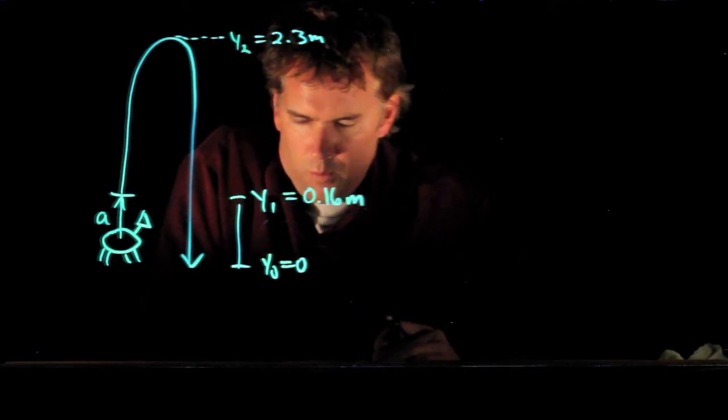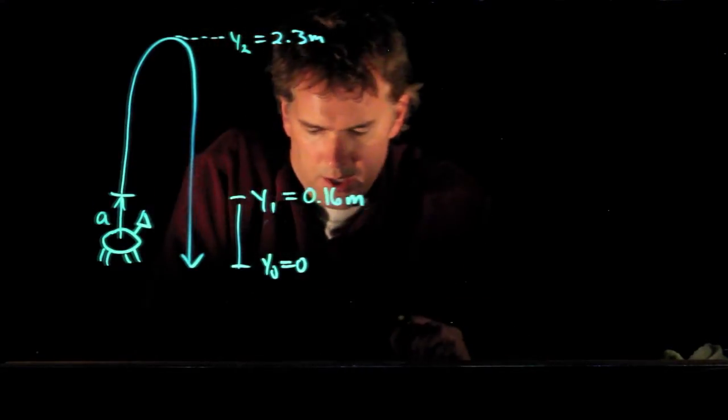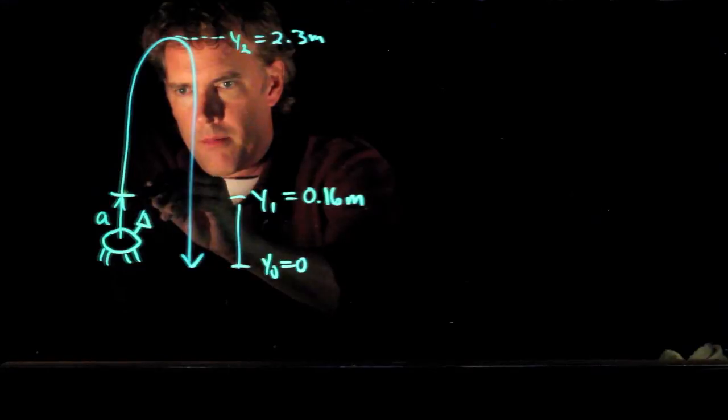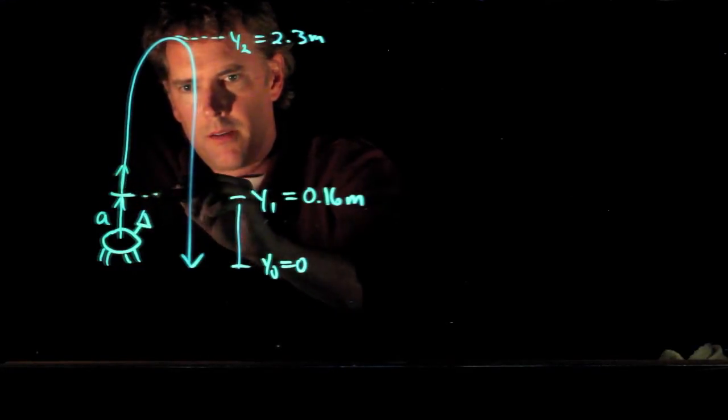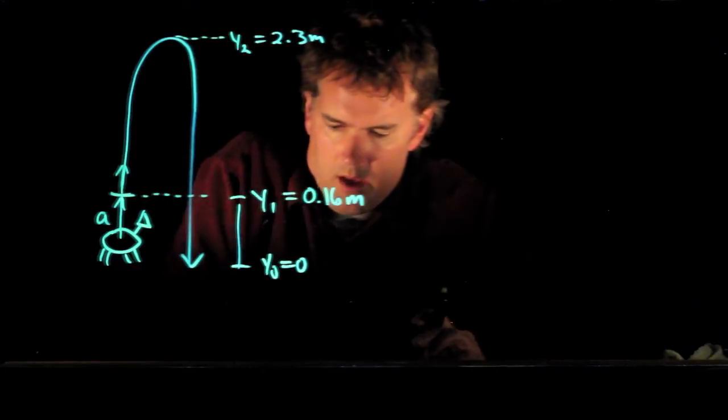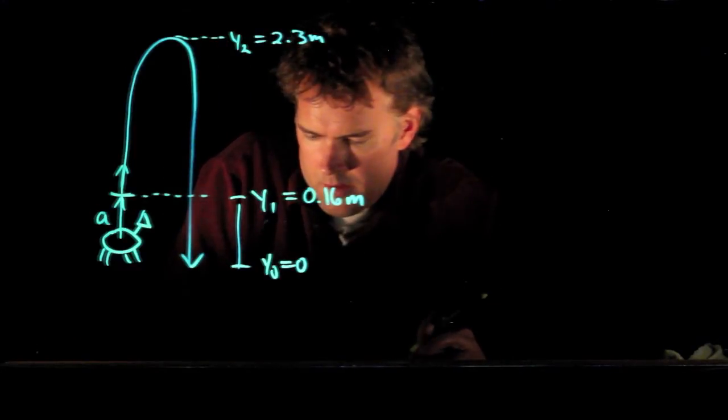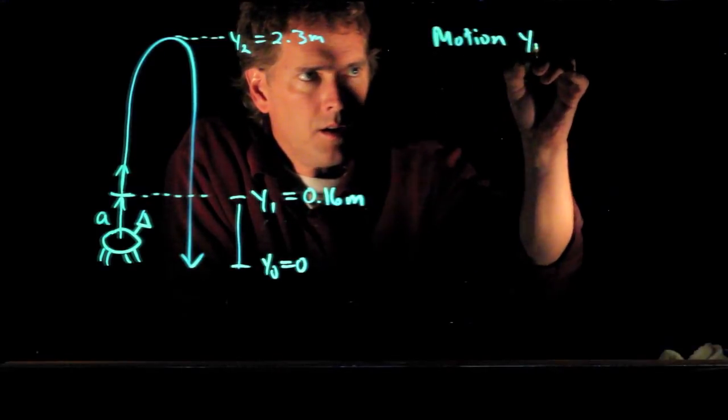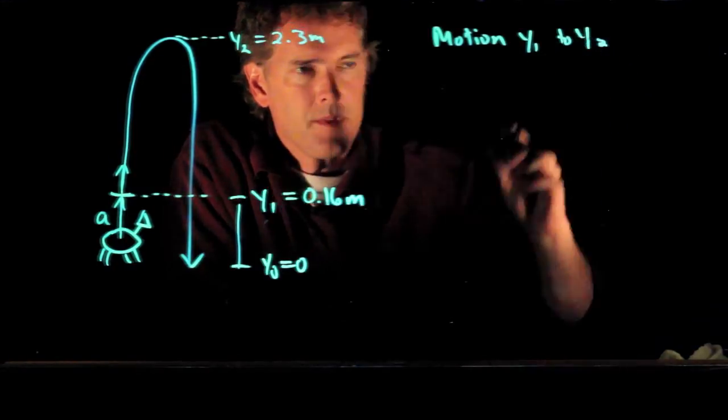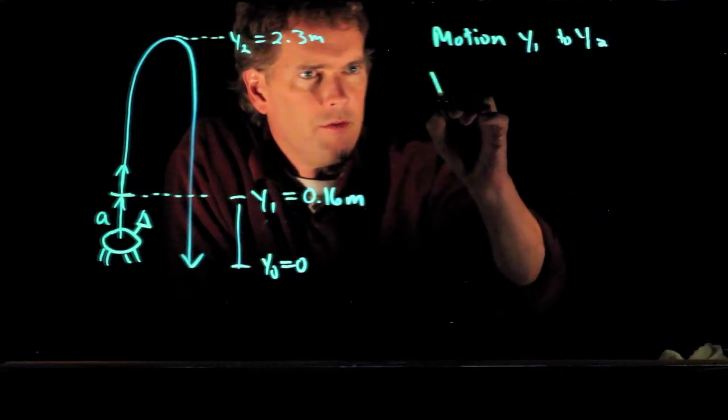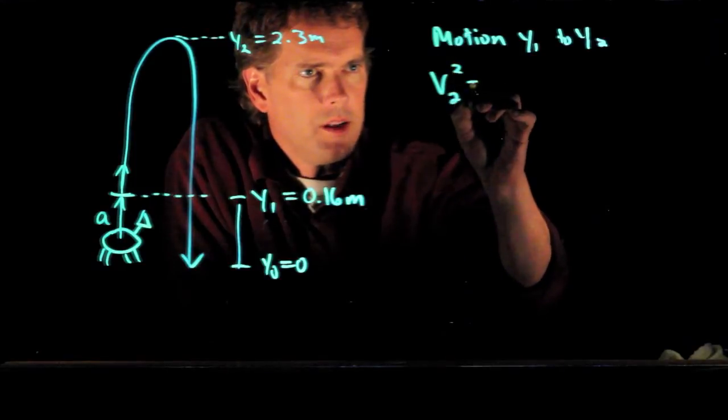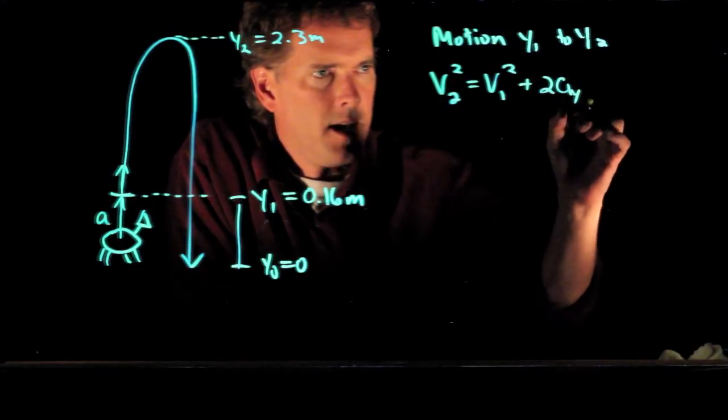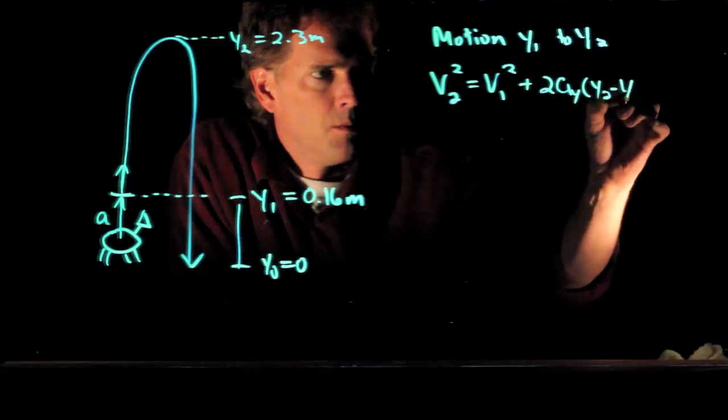All right, so we're looking for this acceleration a, how do we do it? Well first off, if we consider the motion going from this point up, then we can probably say something about the motion. So let's consider the motion going from y1 to y2, and in that region we have an equation v2² = v1² + 2ay(y2 - y1).